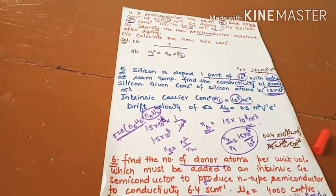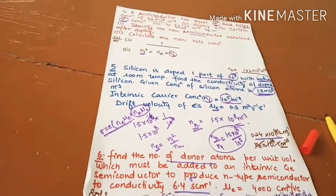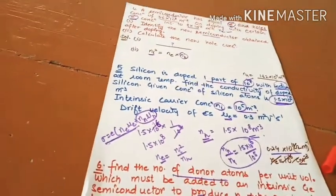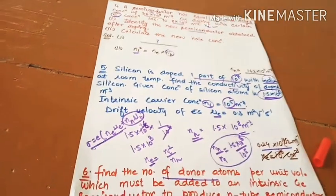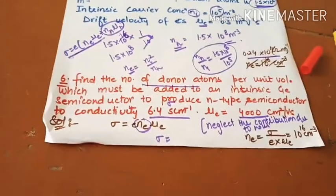Sigma is 19, mu is given. Calculate to find the number of donor atoms per unit volume.